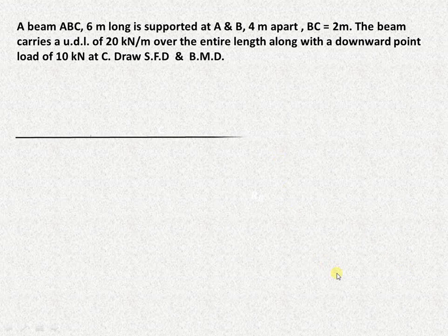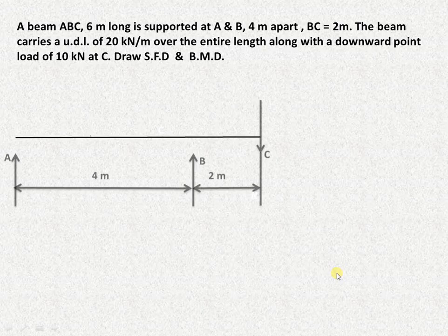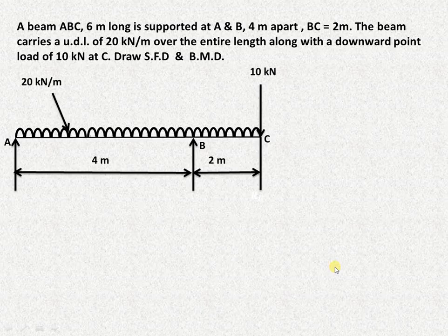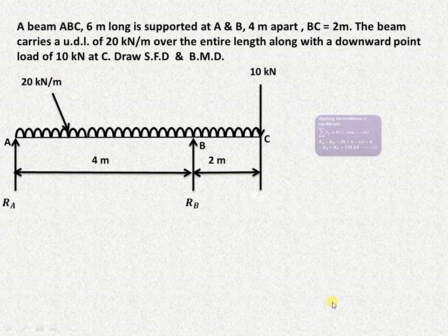Let us start to understand how to find out the point of contraflexure in case of the overhanging beam as shown over here. It is carrying the UDL over the entire span length of 6 meters and a point load at the end. The first step is always to find out the reactions RA and RB.